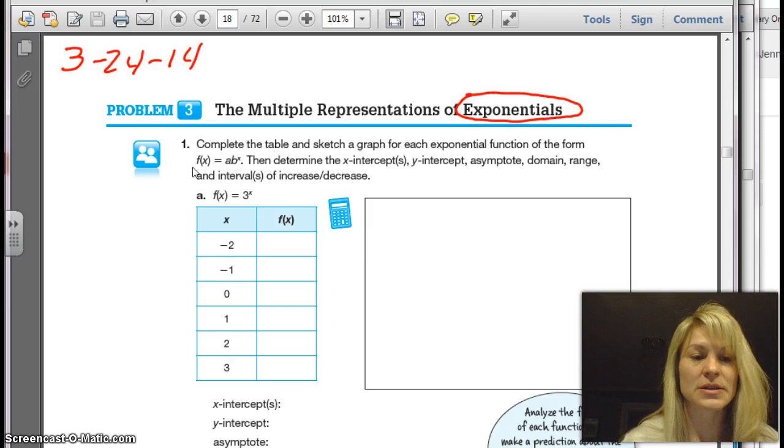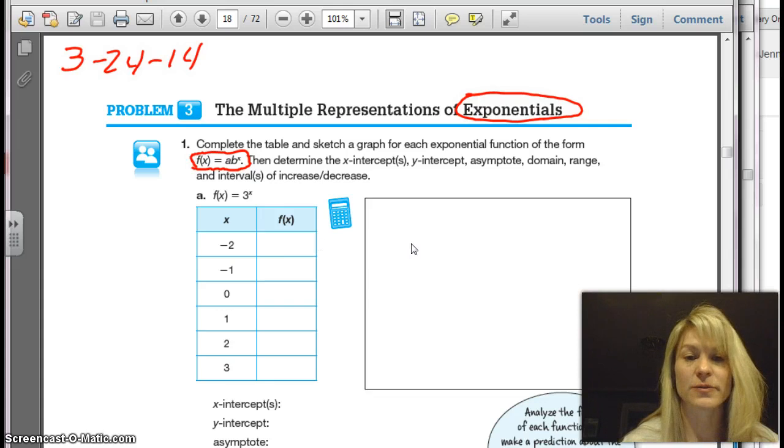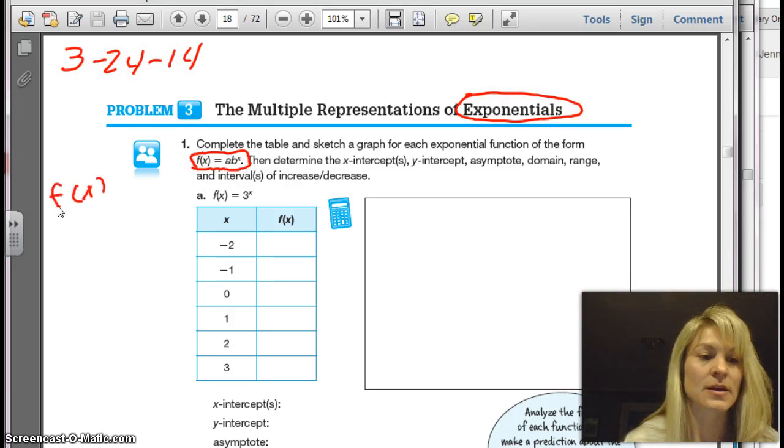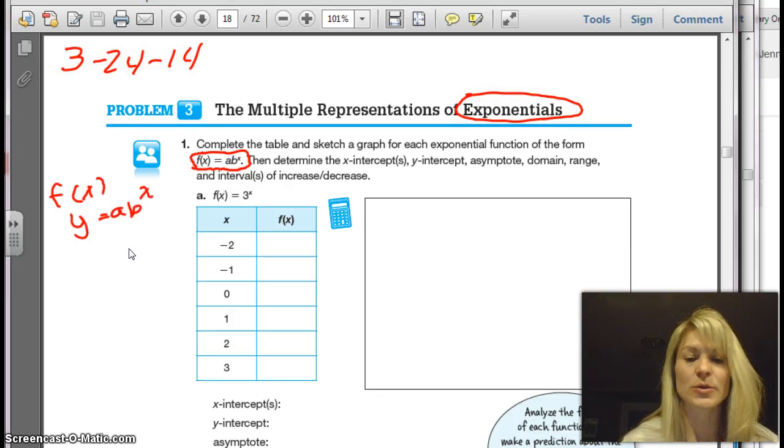Okay, and you need to know that this right here is the equation for exponential functions. f(x) equals a times b to the x power. And remember, f(x) is the same thing as writing y equals a times b to the x power. Okay, so we're going to look at all the different points of the graph. So if we look, this is our equation here. We have f(x), 3 to the x power.